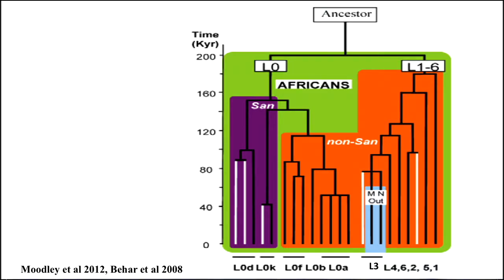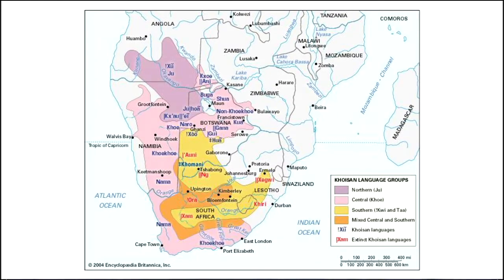Let's look at this mitochondrial tree again, simplified. In this phylogenetic tree, the timeline is 200,000 years, with today at zero at the bottom. All Africans are in green, the San are in purple on the left, and the M and N haplogroups in blue are the ones that came out of Africa. The San are people who still live in South Africa and Namibia today, and here's a map of the different types of San.